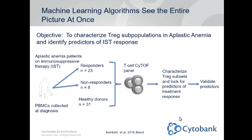The power of using these different machine learning algorithms such as the ones found in Cytobank is that they're going to allow you to see the entire picture at once. This depiction shows the study design for a paper that came out last year in Blood by Cordasty et al. The objective was to characterize Treg subpopulations in aplastic anemia and hopefully identify predictors of immunosuppressive therapy response.